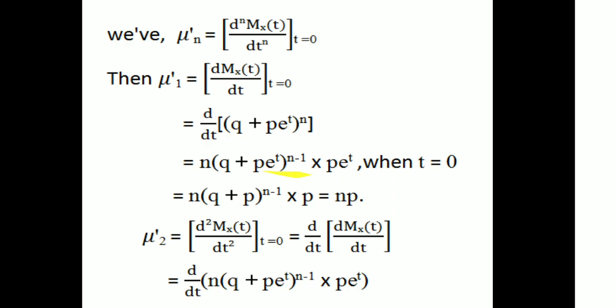When t equal to 0, we get n times p. Therefore the mean is mu₁' equal to np.